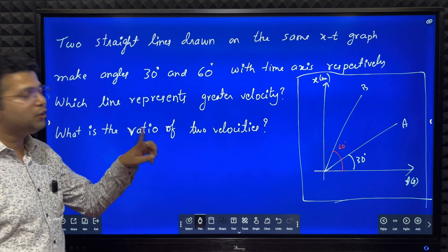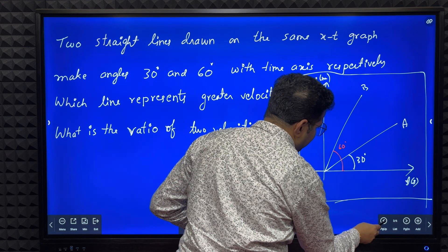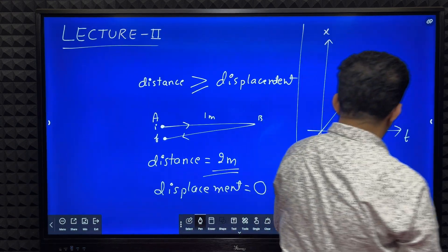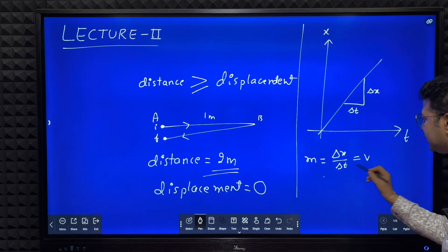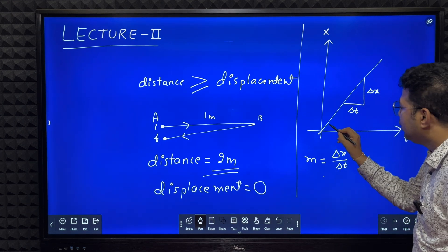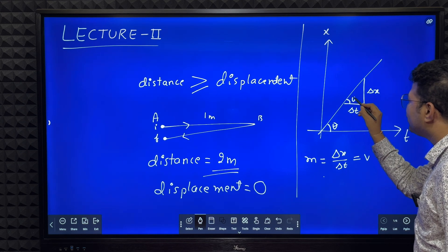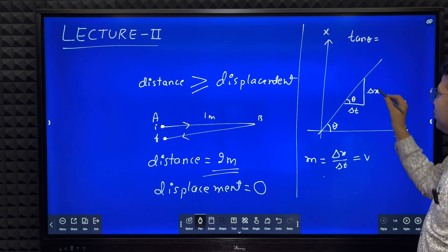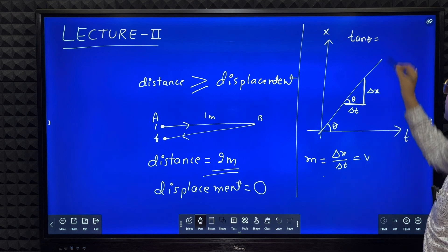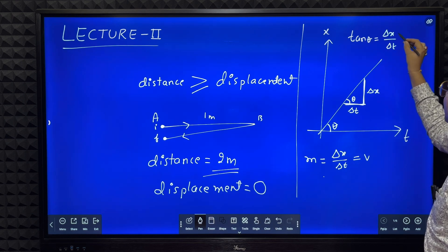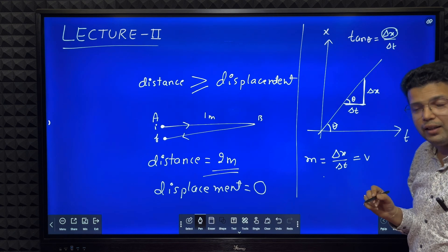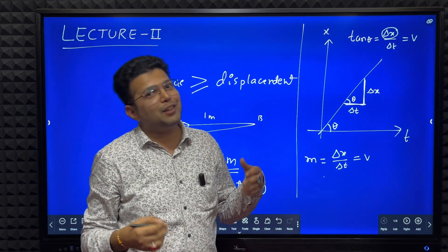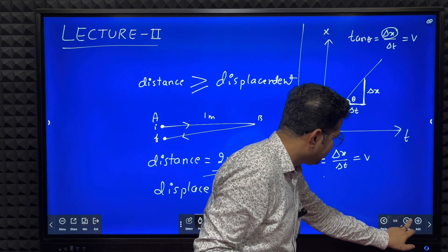What is the ratio of the two velocities? While studying position-time graphs, we studied that slope means delta x by delta t, which is velocity. If this angle is theta, then tan theta equals opposite side divided by adjacent side, which is delta x divided by delta t. Therefore, tan theta gives velocity. If tan theta is more, then velocity is more.